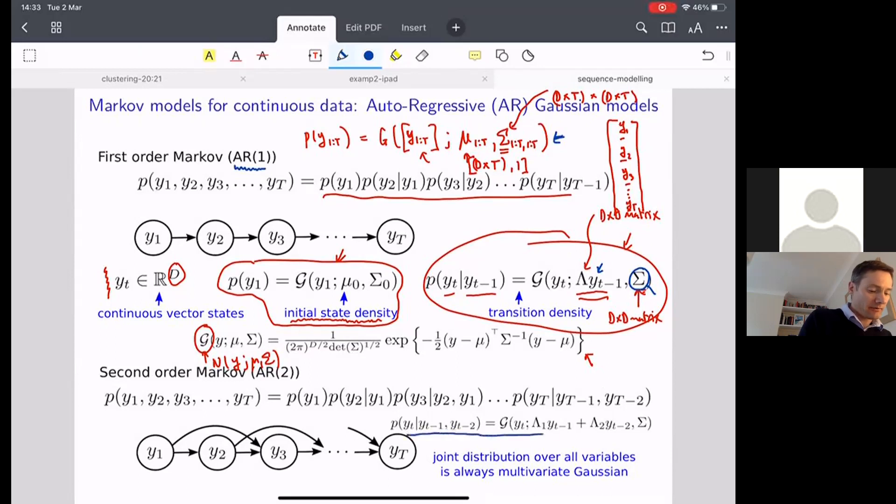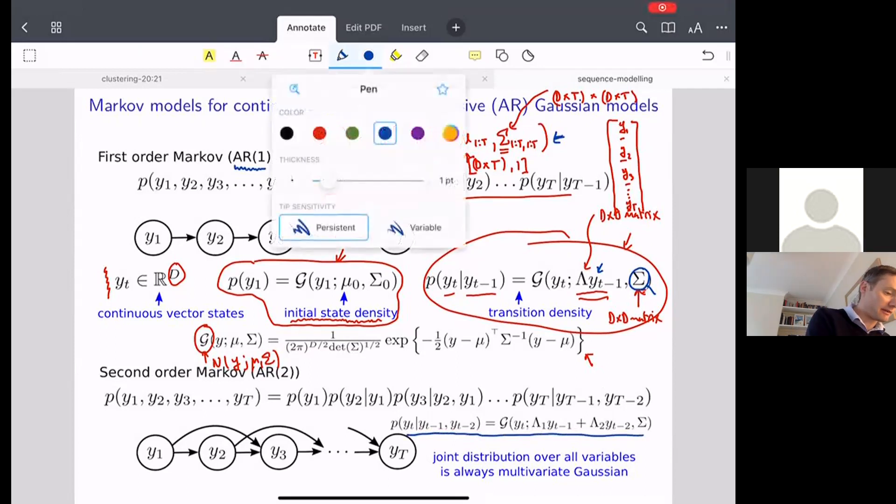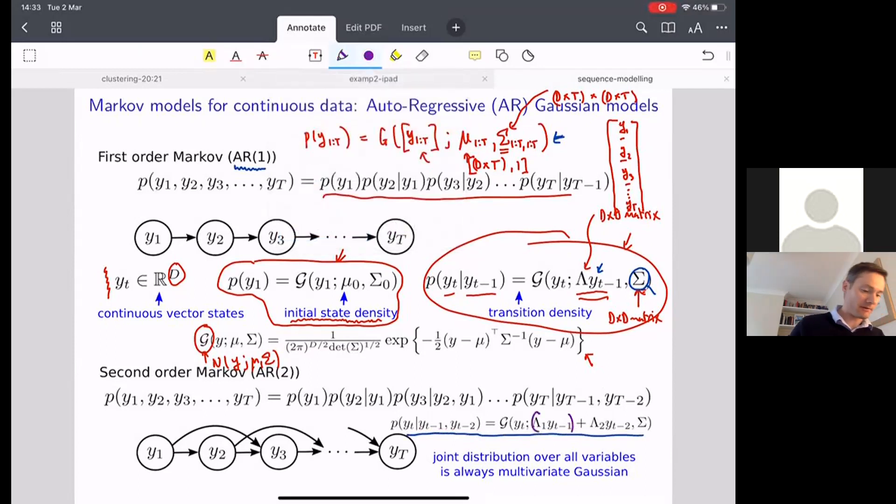Second order AR2 models are defined in an exactly analogous way. This time the main addition is to our transition density. We allow it to not just depend on the previous variable in the sequence, but we have also a term from the y that was two time steps ago, therefore accounting for these sort of hop arrows in the directed graphical model on the left hand side. Again, if you use this construction, the joint distribution over all of the variables is a big multivariate Gaussian distribution, and so you get nice computational properties coming from that.